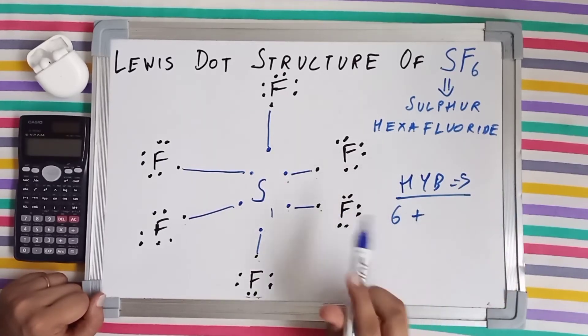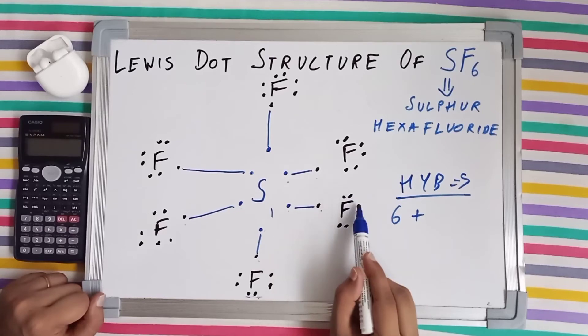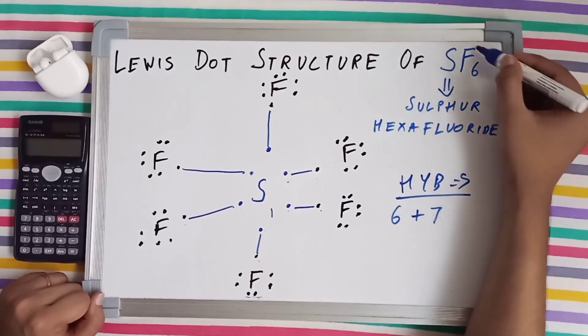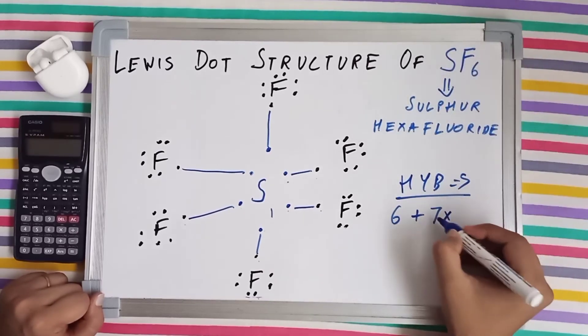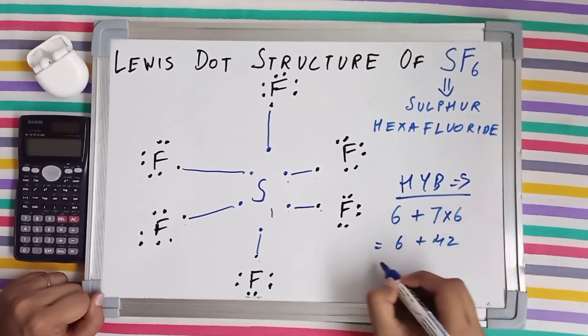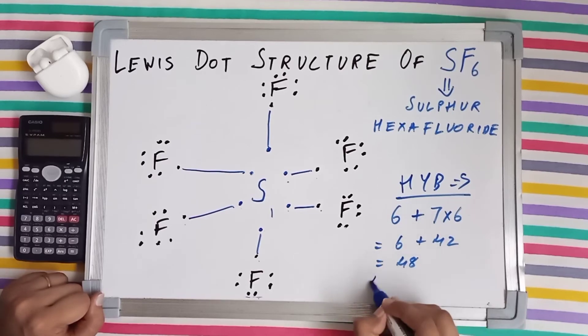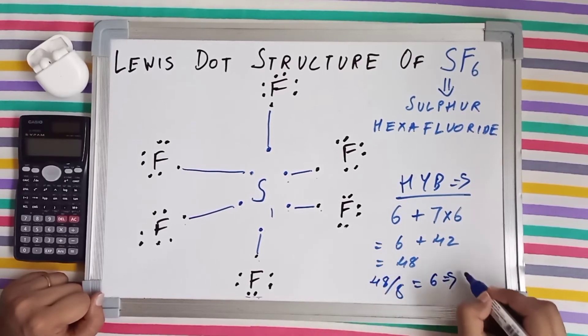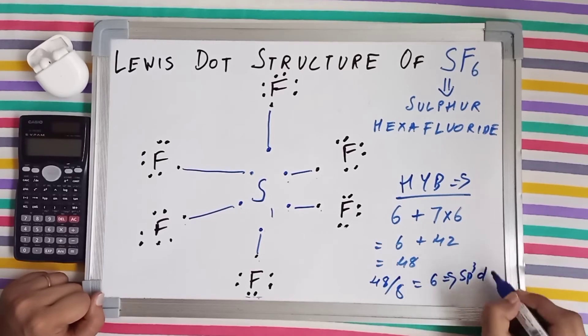So fluorine in non-bonded form has seven valence electrons. But since there are six fluorine atoms, we are going to multiply this seven with six, which comes out as six plus 42, 48. Now 48 is greater than eight. So we are going to divide 48 by eight gives us six, which means it corresponds to sp³d² hybridization.